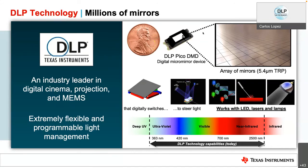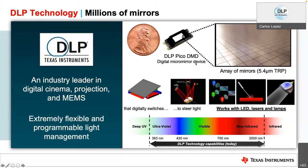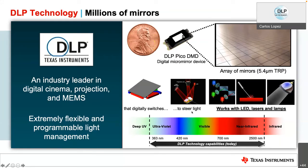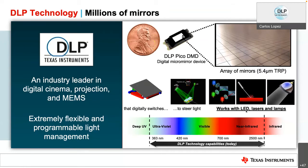For those not familiar with DLP, it is a technology that's a leader in digital cinema projection and MEMS. In fact, nine out of ten worldwide cinemas use DLP technology. At the heart of the technology is a digital micromirror device, or DMD, which has an array of mirrors that digitally switch. It's an extremely versatile technology that works with LED illumination, lasers, and lamps, and also works across a very broad spectrum of wavelength.